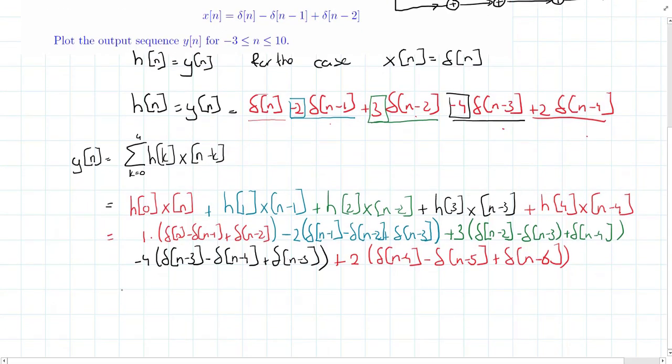Working this out correctly, we collect all terms to obtain the final output expression with contributions at n=0 through n=6, including a term of -6δ[n-5] and 2δ[n-6].